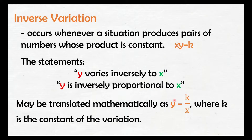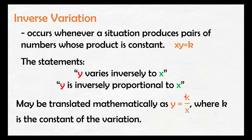So we can translate 'y varies inversely as x' as y equals k over x. The first variable mentioned goes on the left side, and the second variable mentioned in the inverse variation goes on the right side — but it is in the denominator. And our constant is always in the numerator. So one variable is on the left side, the other variable is on the right side in the denominator, and the constant is always in the numerator.